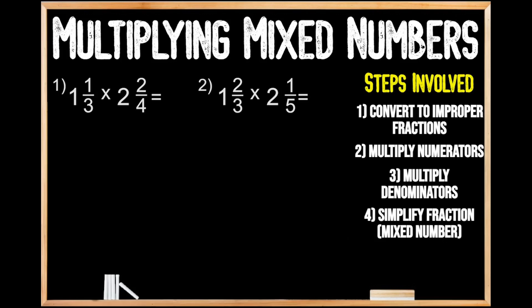In question number one we're being asked to multiply the mixed numbers 1 and 1 third times 2 and 2 fourths. Looking over to the right hand side here under our steps involved, we can see that our first step is to convert these mixed numbers to improper fractions.